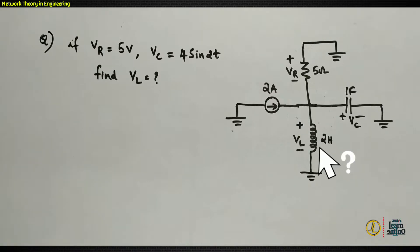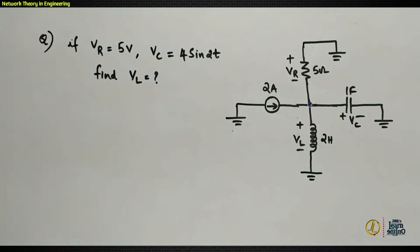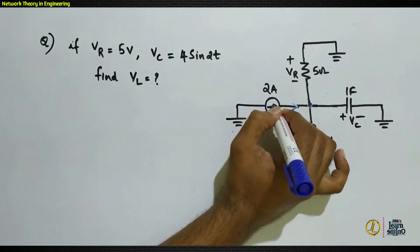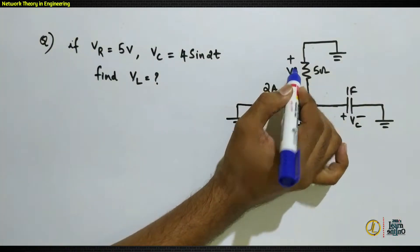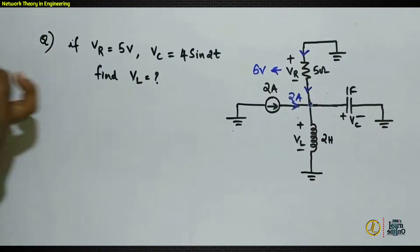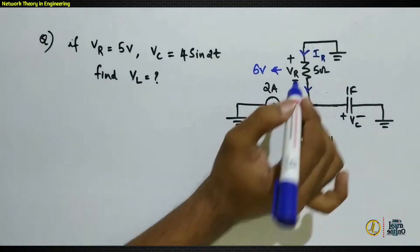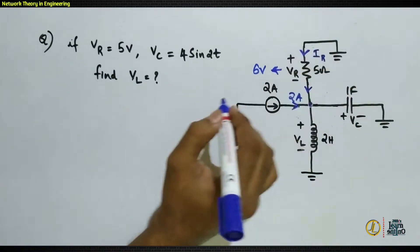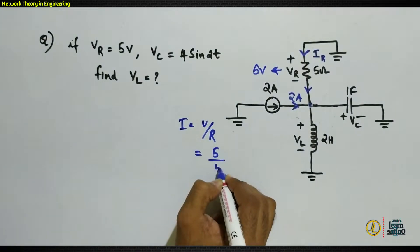To solve this, apply KCL at the junction. There is a 2-ampere current source delivering 2 amperes to this junction. Since VR equals 5 volts with the given polarity, current IR flows through that branch. A 5-volt drop across a 5-ohm resistor gives IR = V/R = 5/5 = 1 ampere, so 1 ampere flows through this branch.